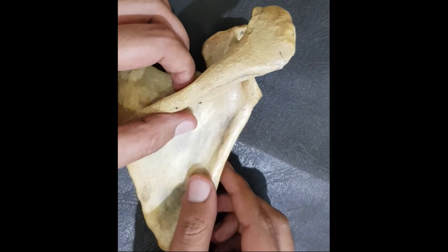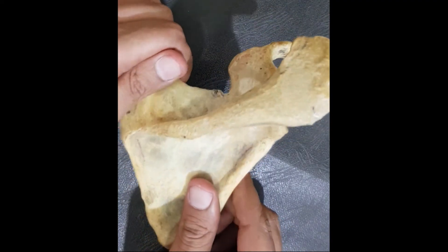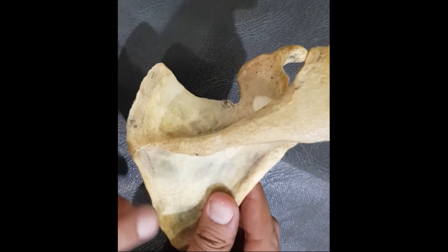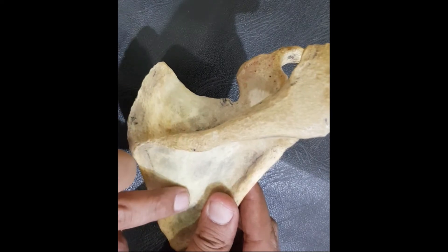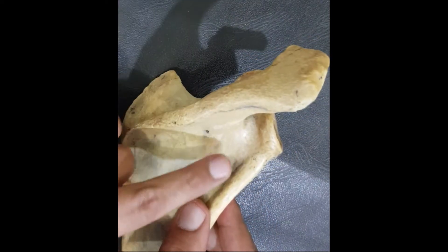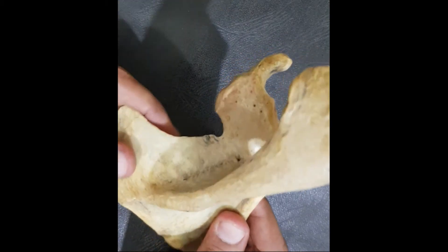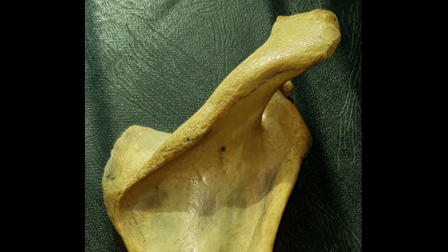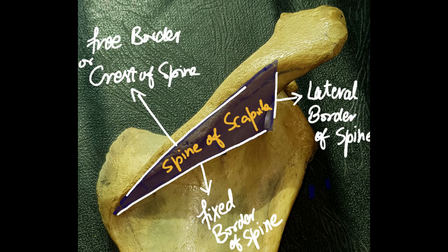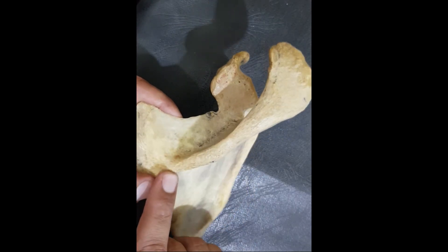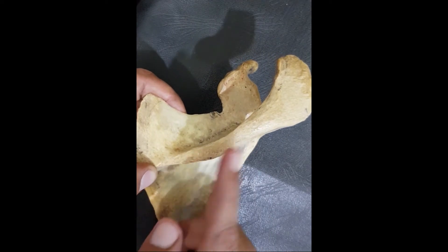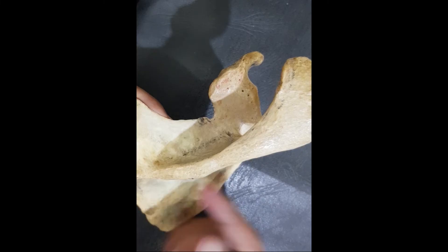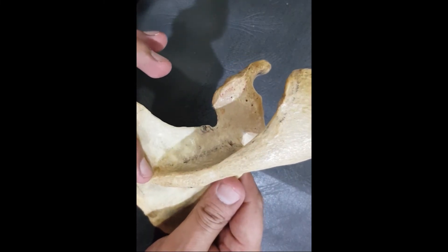After the surfaces, I am going to describe the processes. The scapula has got three processes. One is the spine — a blade-shaped process which divides the posterior surface into the supraspinous fossa and the infraspinous fossa. This spine has got an attached part and a free part. The free border is known as the crest of the spine. This crest has got a lower margin, that is the lower lip, and an upper margin, that is the upper lip of the spine.